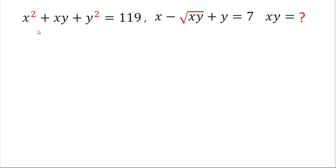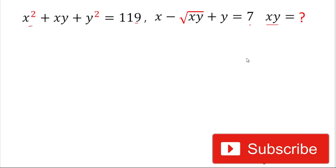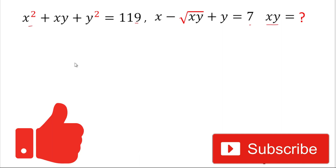Hello friends, welcome back to my YouTube channel. Today we are going to solve this algebraic problem. The problem is: x² + xy + y² = 119, and the second equation is x − √(xy) + y = 7. We have to find the value of x and y. Please subscribe to my channel and don't forget to give a thumbs up to the video.